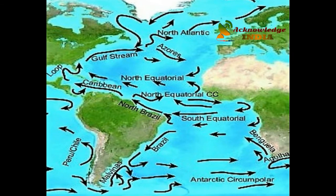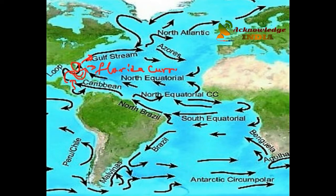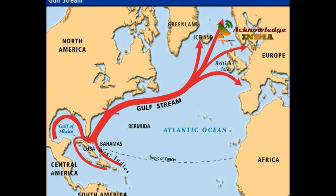The part of current which enters the Gulf of Mexico comes out from the Florida Strait and joins the Antilles Current. This combined current moves along the southeastern coast of the USA and is known as the Florida Current. Beyond the Cape of Hatteras it is known as the Gulf Stream.